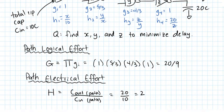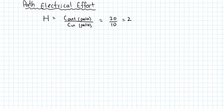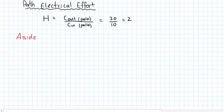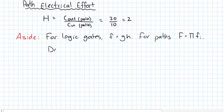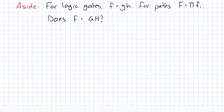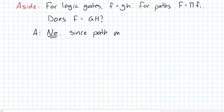We want to compute path effort F to calculate delay. For individual logic gates, lowercase f = g × h. For a path, big F equals the product of all individual little f's. One might ask: can we just say F = G × H? That would be convenient, but the answer is no — because a path might branch out.